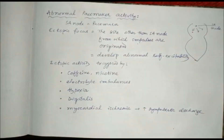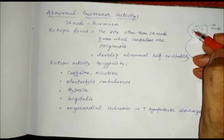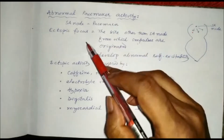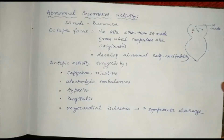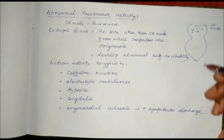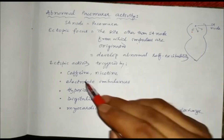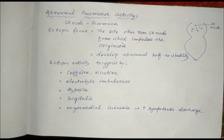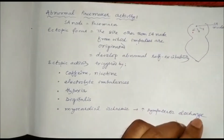Abnormal pacemaker activity — we know the pacemaker is the SA node, and from the SA node the impulse is formed or generated. If there are some other points other than the SA node from which impulse is generated, that site is called an ectopic focus. That ectopic focus develops abnormal self-excitability. In addition to the SA node there will be more impulses. This may be triggered by caffeine, nicotine, electrolyte imbalances, hypoxia, digitalis therapy, myocardial ischaemia, or increase in sympathetic discharge.